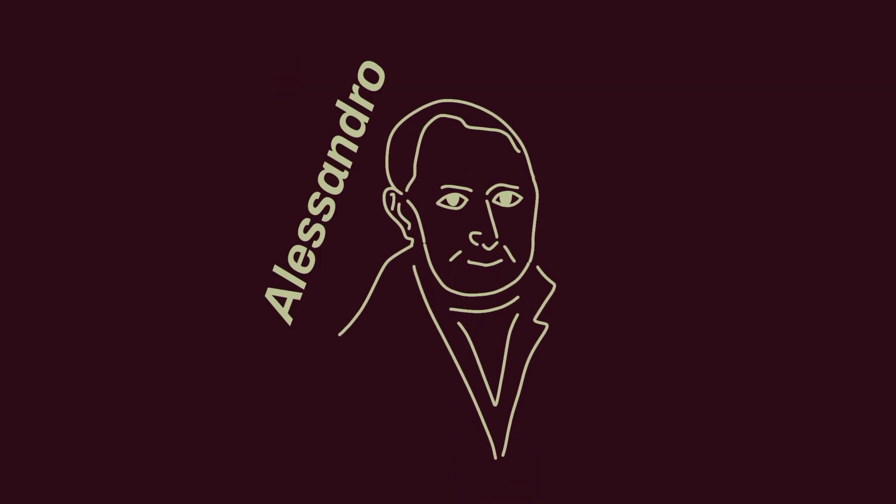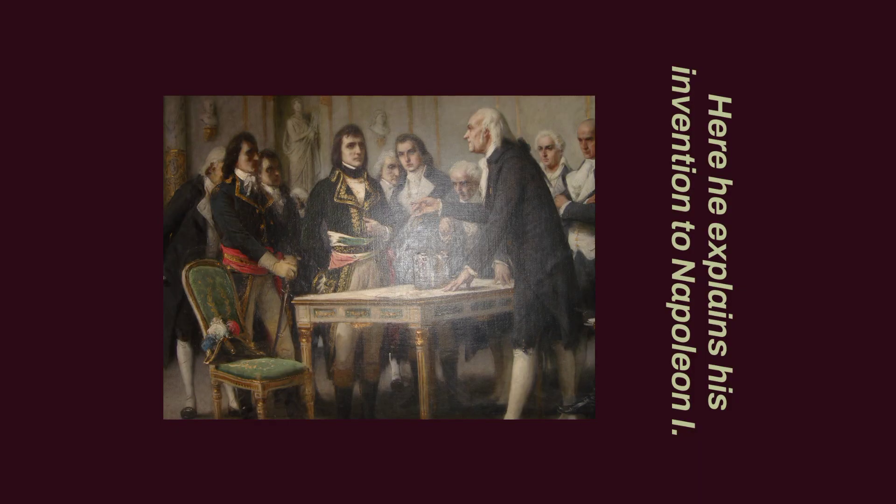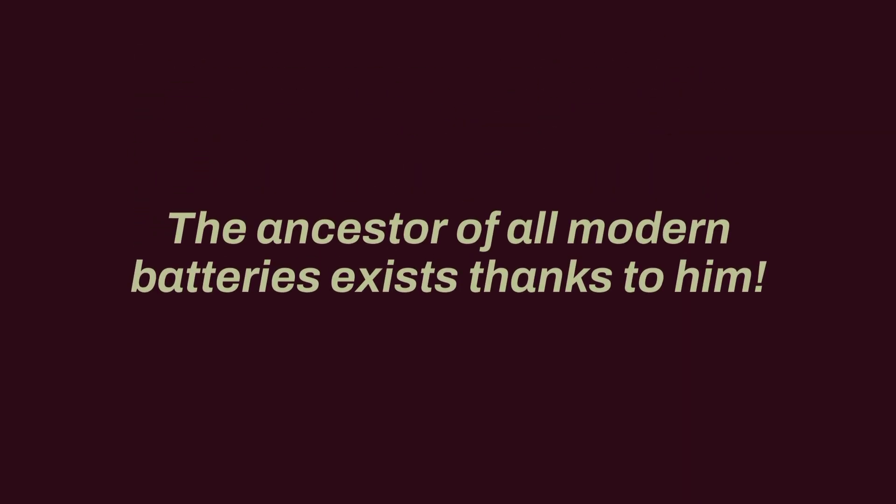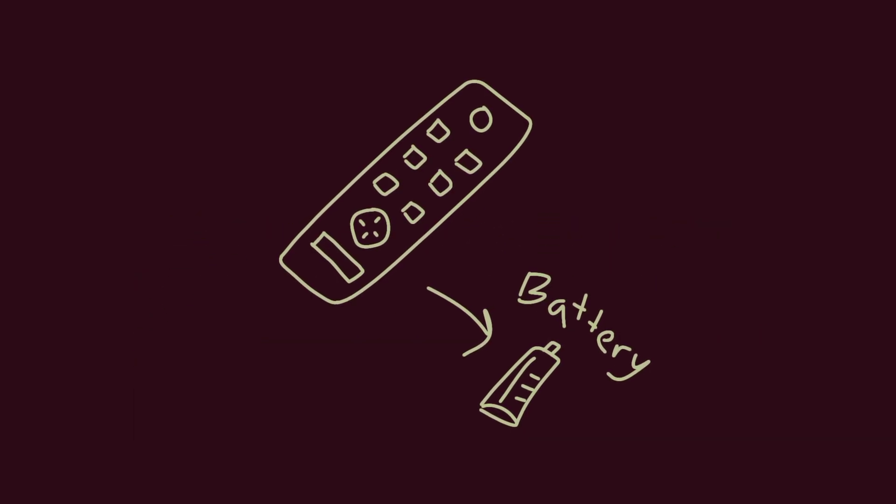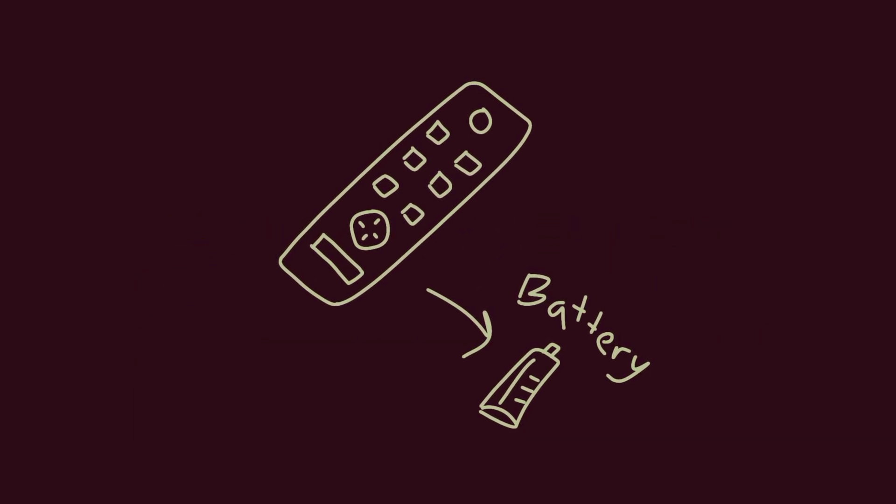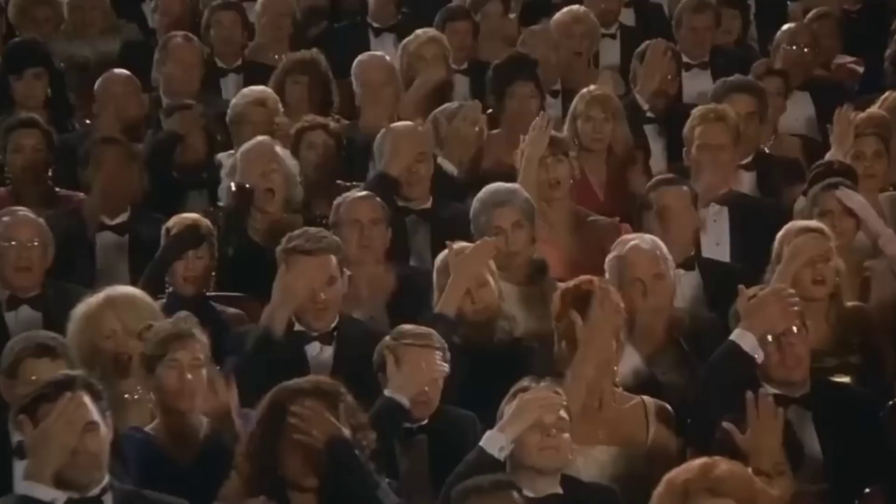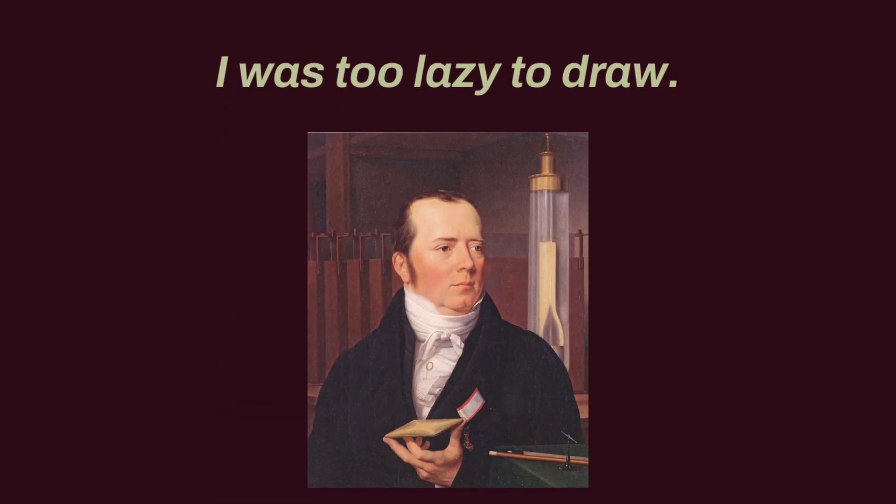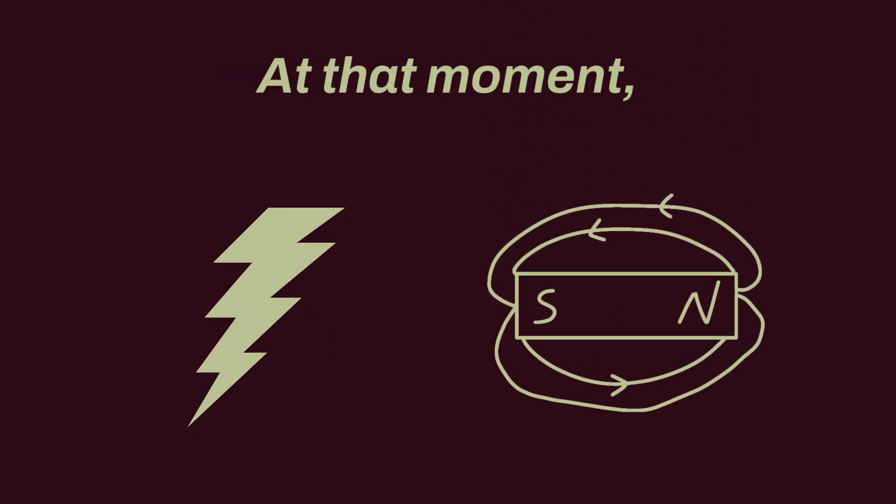Then comes Alessandro Volta. He worked so hard that he discovered a chemical reaction in a battery generates an electric current. The ancestor of all modern batteries exists thanks to him. Don't forget to give a shout out to Volta when the battery in your TV remote dies. Following him, Hans Christian Ørsted noticed that an electric current passing through a wire moved a compass needle. At that moment, he understood there was a relationship between electricity and magnetism. And ever since that day, all electric motors and generators have been based on this simple principle.